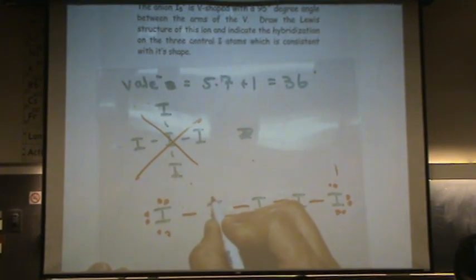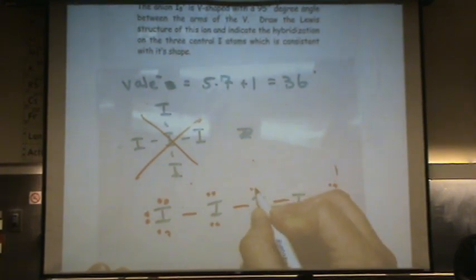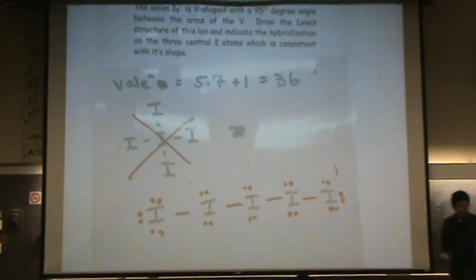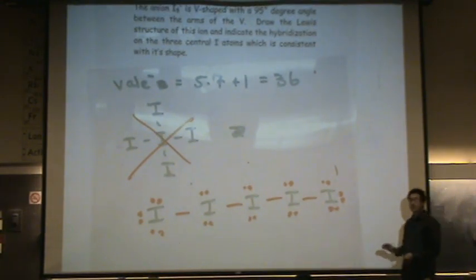Now I do the inside. 20, 22, 24, 26, 28, 30, 32. I've filled my octets, and I still have 4 electrons, or 2 pairs of electrons. Where do you want those?